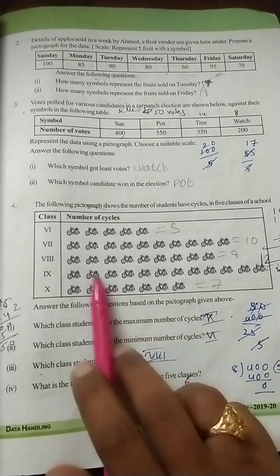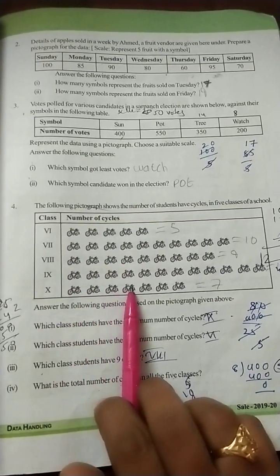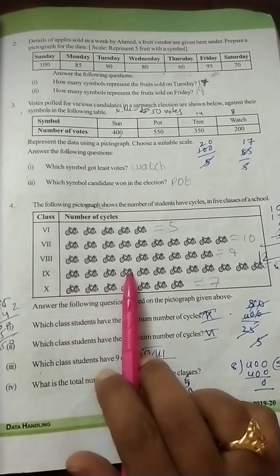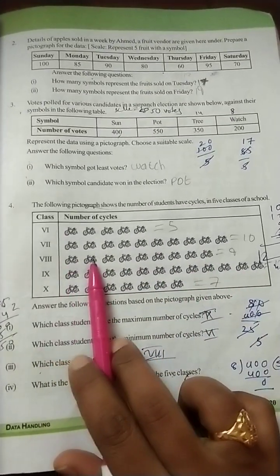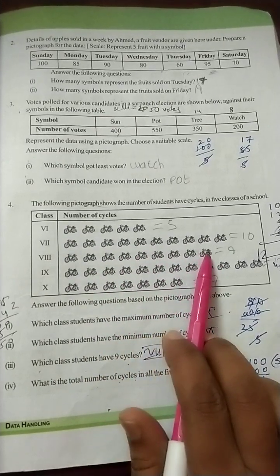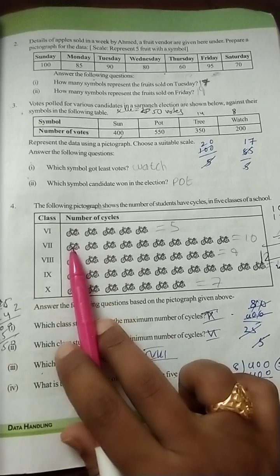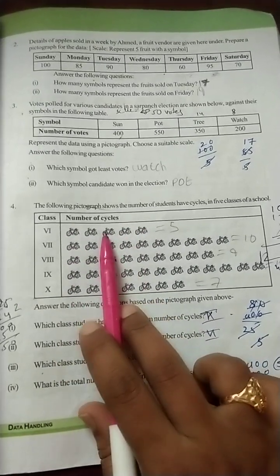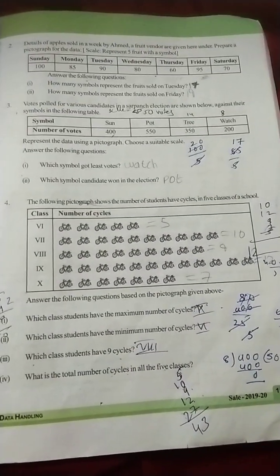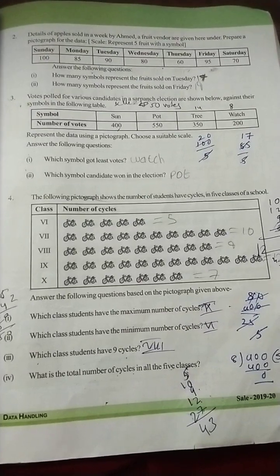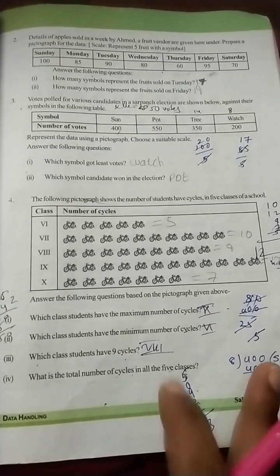If you don't want to do adding, just you can count. One, two, three, four, five... forty-one, forty-two, forty-three. Forty-three total number of cycles like that you will get. Easy when you know. Counting or adding, that's your wish. It depends on your interest. This is the fourth question solution.